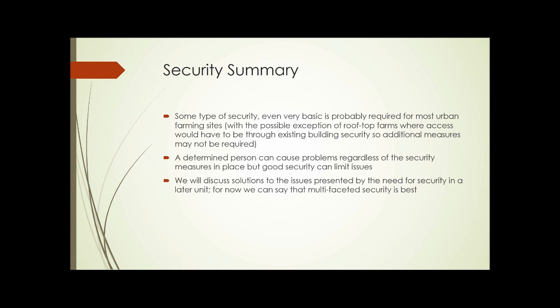In summary, some type of security — even very basic security — is probably required for most urban farming sites, with the possible exception of rooftop farms where access would have to be through the building and existing security. A determined person can still cause problems regardless of security measures in place, but good security can limit issues. We'll discuss some solutions in a later unit, but one thing we can say now is that multifaceted security is best — combinations such as fencing with an alarm system, or signage with lighting, typically work best. That ends part one of this unit's presentation.